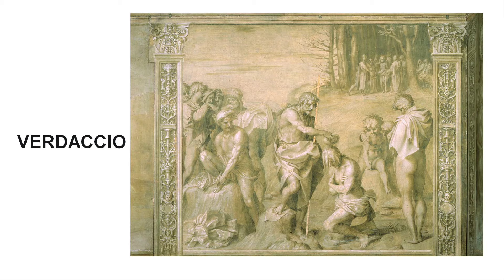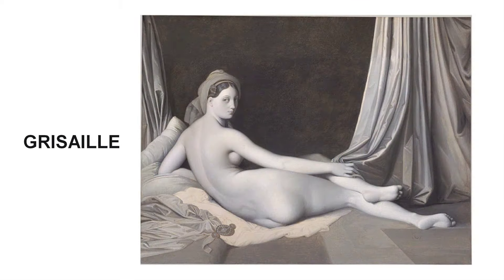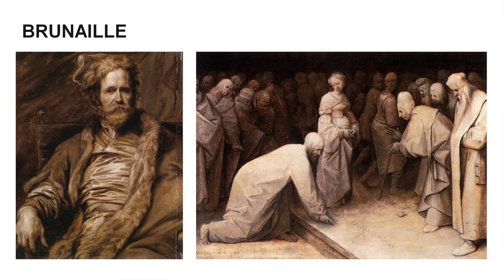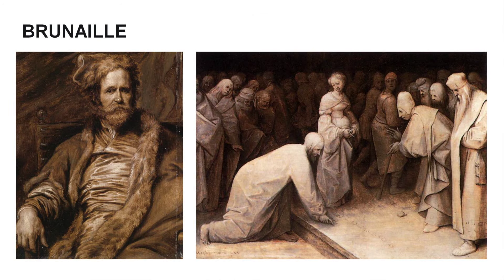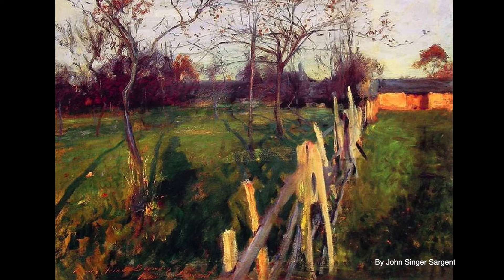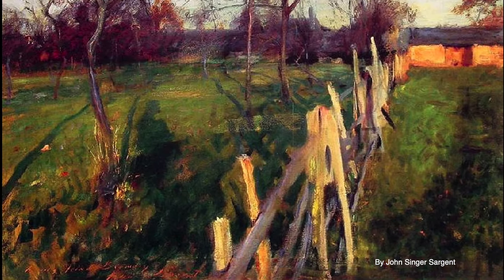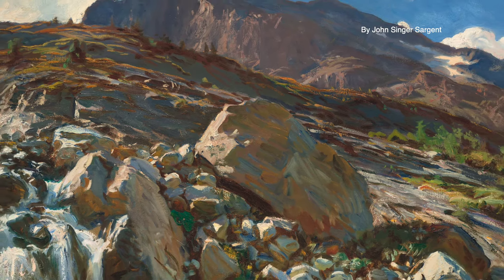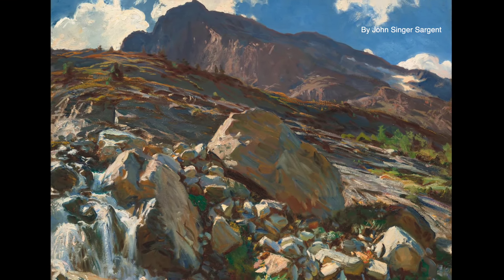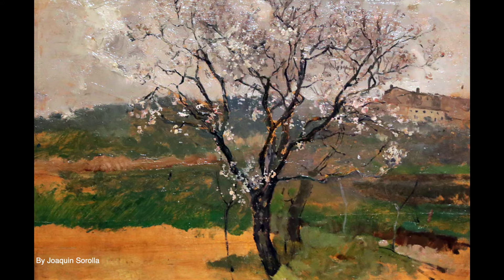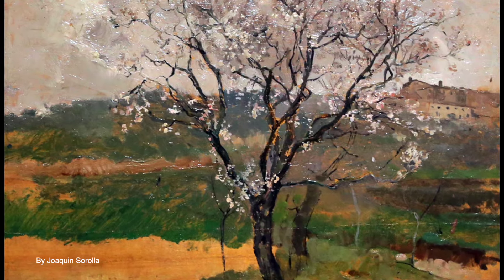The French masters worked with the grisaille, a combination of black and white to mix several tonal values. And the Dutch painters used the brunel, in which they used earth colors thinned with turps to create different shades. Don't be afraid to experiment with contrasts — a bold difference between light and shadow can add drama and interest to your piece. It's all about finding that sweet spot and letting your values do the talking.